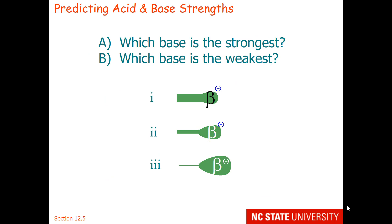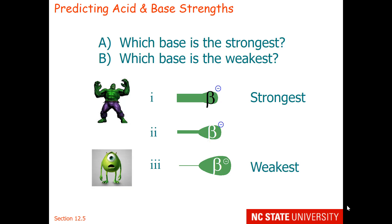Now let's look at bases. Which base is the strongest? Which one has the most electron density to reach out and grab a proton? That would be the Hulk without his proton — if the Hulk didn't have his proton, he would be the strongest base. And poor Mike Wazowski with his flabby arms would be the weakest base because he's going to form the weakest bond with the hydrogen.